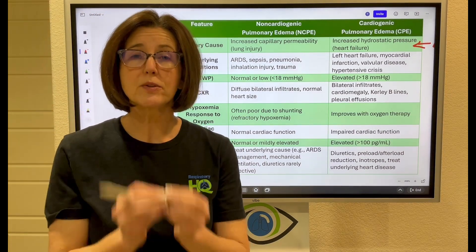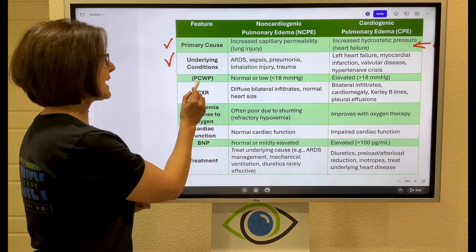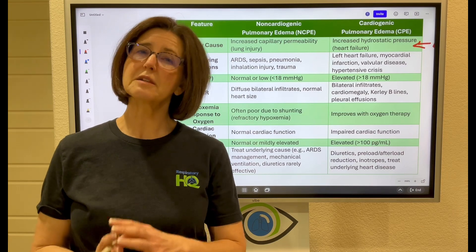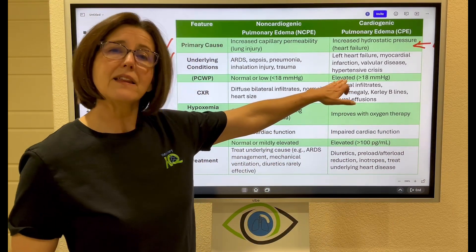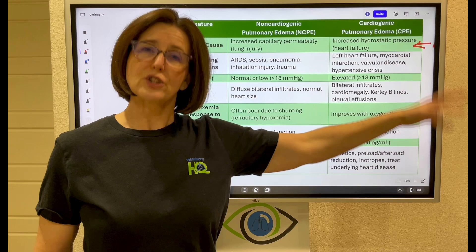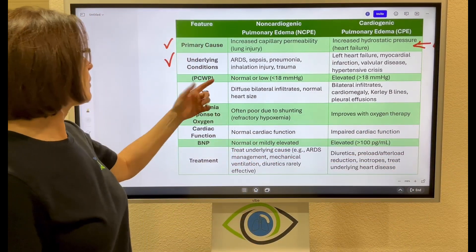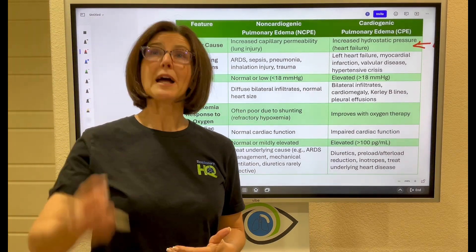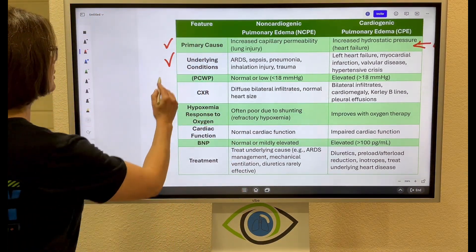When talking hemodynamics, your biggest indicator is the pulmonary capillary wedge pressure (PCWP). The PCWP tells us about pressures on the left side of the heart, so it will be elevated with cardiogenic pulmonary edema. It will be normal or maybe a little bit low with non-cardiogenic pulmonary edema, because nothing is wrong with the left side of the heart — it starts at the lung.